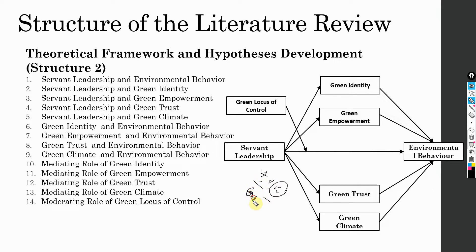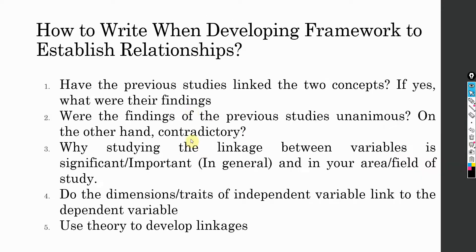If you have got contradictory findings, this means there is a need for new research to conclude the relationship between these two concepts. Apart from just linking the two variables based on existing research, you need to find out why studying the linkage between these variables is important — in general and with respect to your specific area of study.